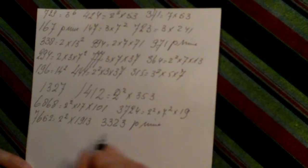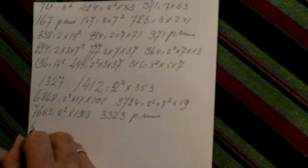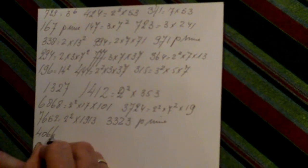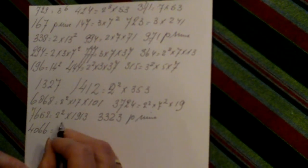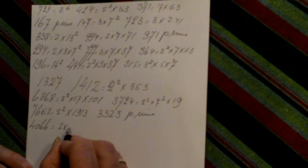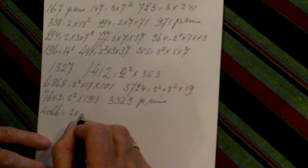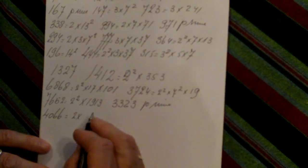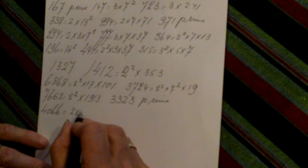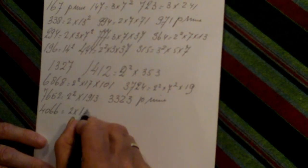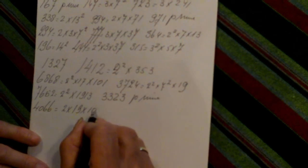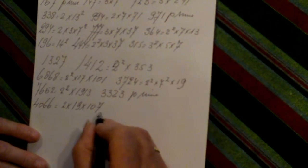4066. Four, zero, six, six is two times nineteen times one hundred and seven.